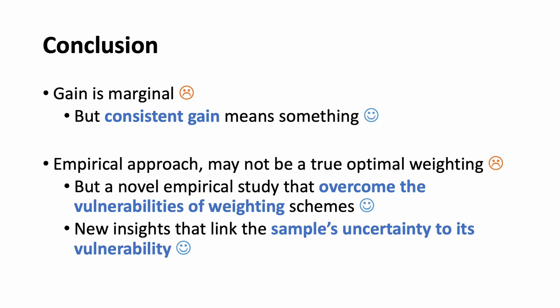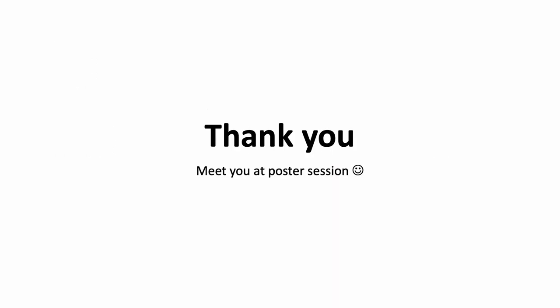As a conclusion, while there are limitations to this work, such as marginal improvement in performance, we believe our work shows consistent improvement in diverse tasks, which is a meaningful finding. Moreover, our approach is somewhat empirical and may not be the true optimal reweighting scheme. However, we believe it is the first attempt to address the previous errors in reweighting methods and demonstrate that reweighting can indeed improve robustness. We also think we may provide new insights that link uncertainty to vulnerabilities. Thank you for listening.